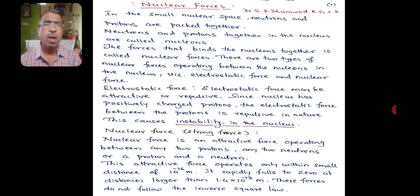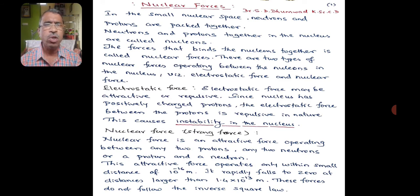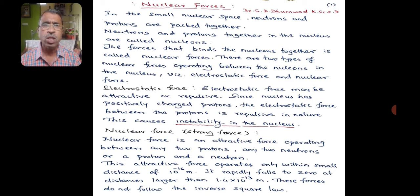Electrostatic force may be attractive or repulsive. Since the nucleus has positively charged protons, the electrostatic force between two protons is repulsive in nature, which causes instability in the nucleus. Now we have another force called the nuclear force, which is a stronger force. Nuclear force is an attractive force operating between any two protons, any two neutrons, or a proton and a neutron.